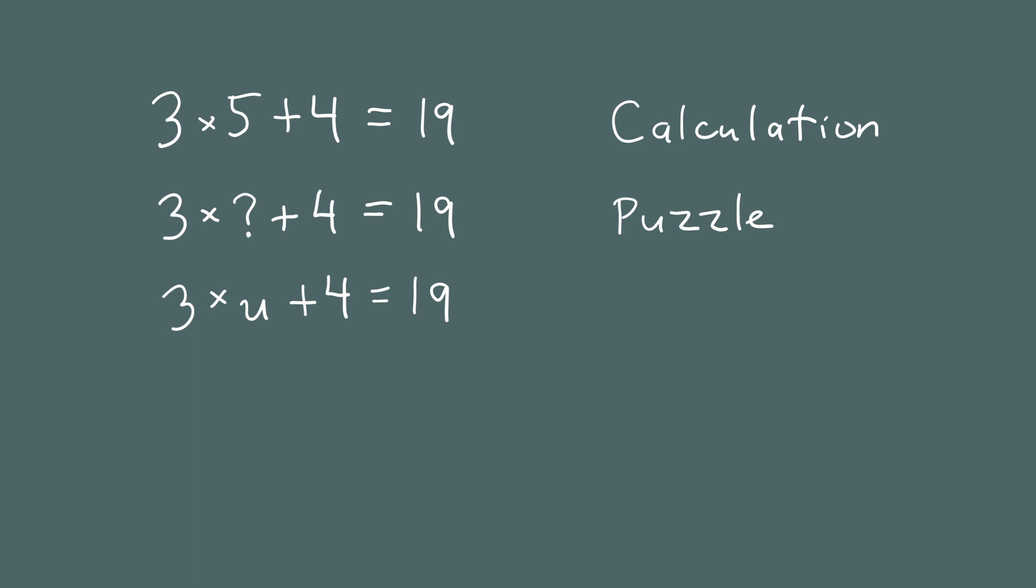Now, if we're going to use letters to stand for numbers, we have one little thing we need to worry about. If you look at the 3 times U, the multiplication symbol looks like a tiny little x. Since we're using letters now, we want to avoid any confusion. So instead of the little x for multiplication, in algebra, you usually use a dot. So here we have what we call an equation.